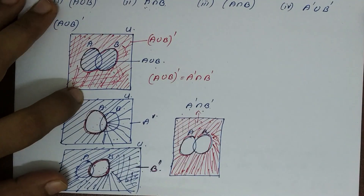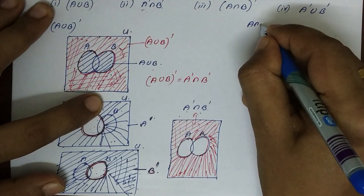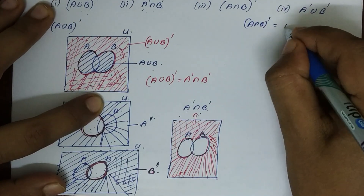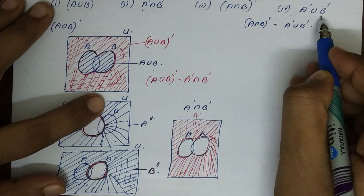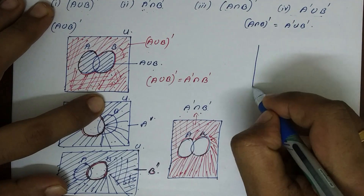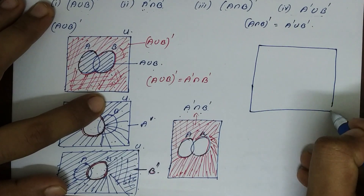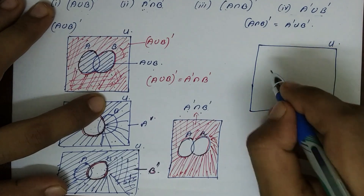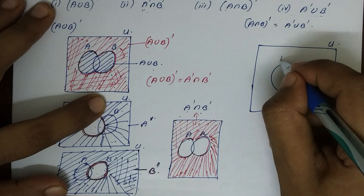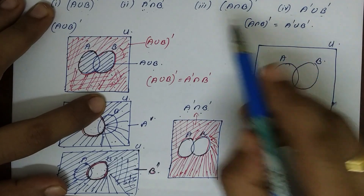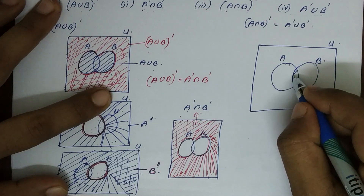The third question: A intersection B the whole complement is equal to A complement union B complement. We draw a rectangle for U with sets A and B. A intersection B is shaded — the common region of A and B — then we take its complement.